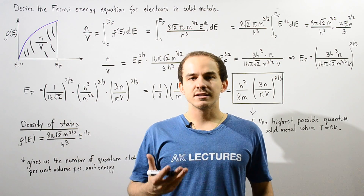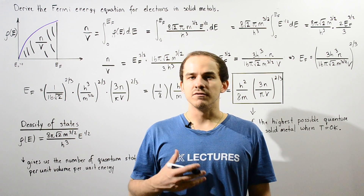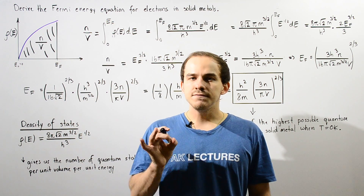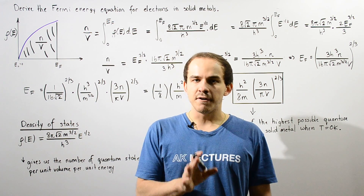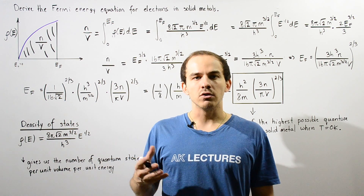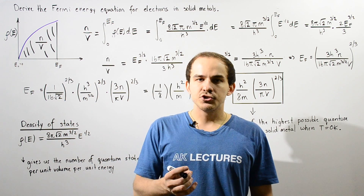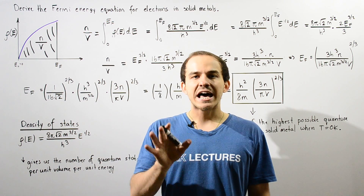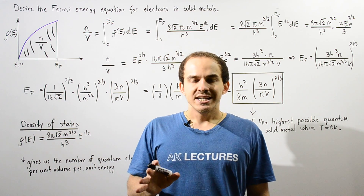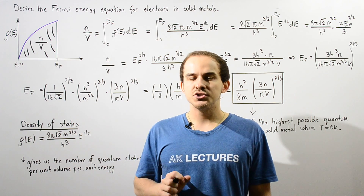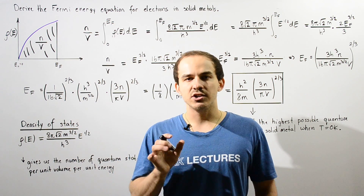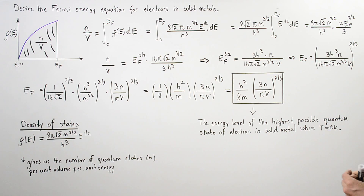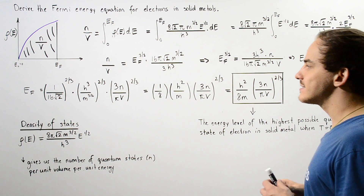In the previous lecture, we discussed the Fermi energy level of electrons inside solid metals at a temperature of zero Kelvins. We defined the Fermi energy as the energy level of the highest possible quantum state of the electron at that temperature. We stated the equation without deriving it, and in this lecture we're going to derive the Fermi energy equation for electrons in solid metals.